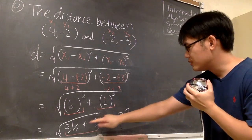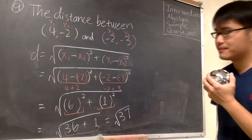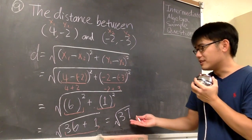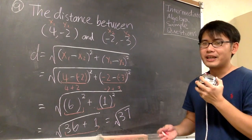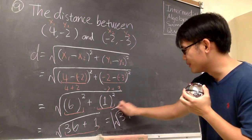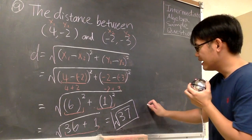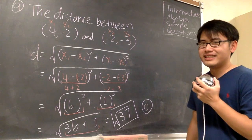We still have the square root on the outside. So now we have the square root of 37. The good thing is that we cannot simplify this further — this is the most that we can do. Therefore, this is the answer, and that's answer choice C.